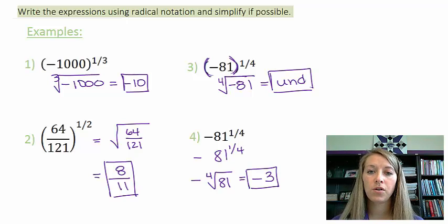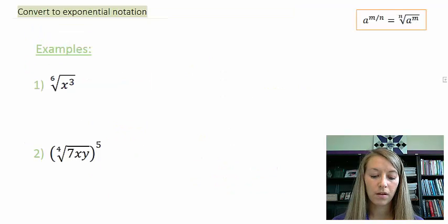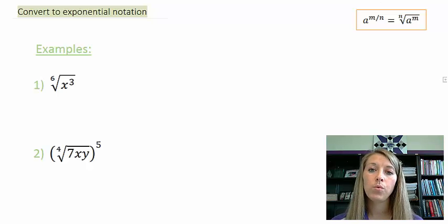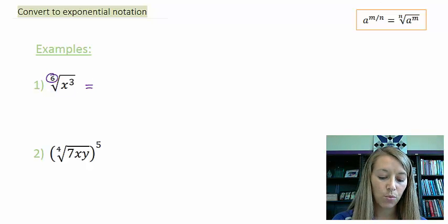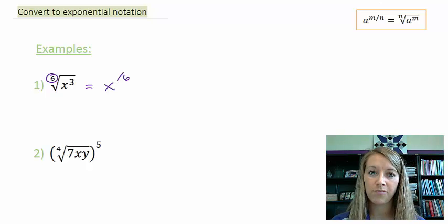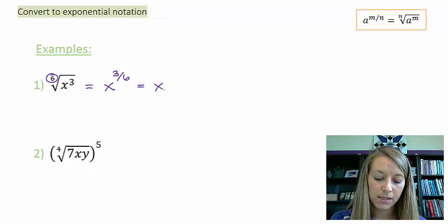Now we'll do the opposite: they give us roots or radicals and we rewrite in rational exponent format. In example one, I have the sixth root of x to the third power. Whatever the root is goes in the denominator of the fraction, so the 3 stays in the numerator and the 6 goes in the denominator. We always simplify if we can, so x to the 3 over 6 simplifies to x to the one half.